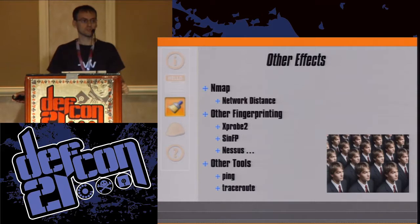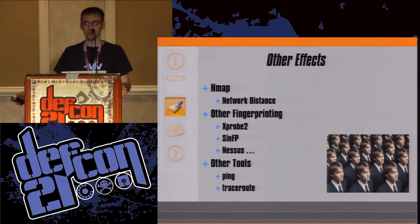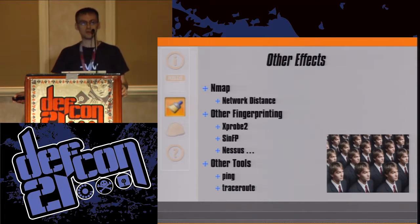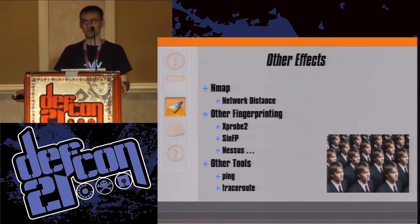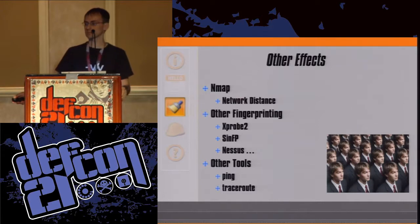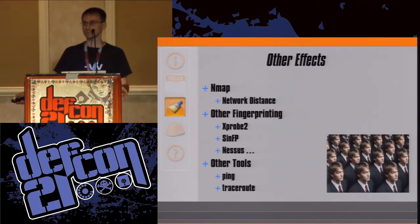In addition to those fantastic results, there are some other effects. NMAP does report a negative distance number — a little strange, but ultimately completely harmless. How about other fingerprinting tools? X-Probe, SynFP, and Nessus — at least for OS identification at the network and transport layer — are equally confused. They see either nothing at all or have completely wildly off results, exactly like NMAP. And our network monitoring tools — ping and traceroute — are able to operate normally without any problems whatsoever.